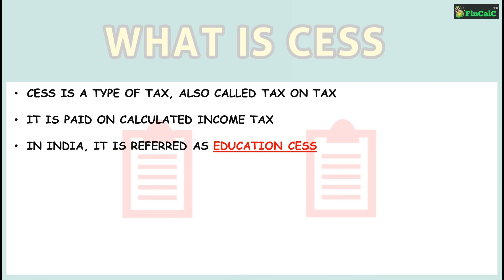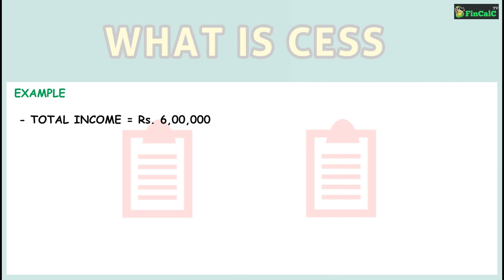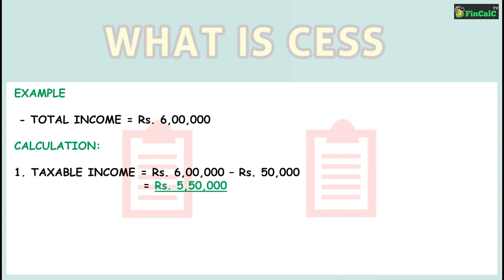Let us now see how this CES will be applicable while calculating income tax, with the help of an example. Let's say your total income in financial year 2019-20 is rupees 6 lakhs. A standard deduction of rupees 50,000 will be applicable in case you are an employee or pensioner, and this will reduce your taxable income to rupees 5 lakhs 50,000. Taxable income is the income on which we calculate our income tax. If there are no investments made in financial year 2019-20, income tax will be calculated on taxable income of rupees 5 lakhs 50,000.